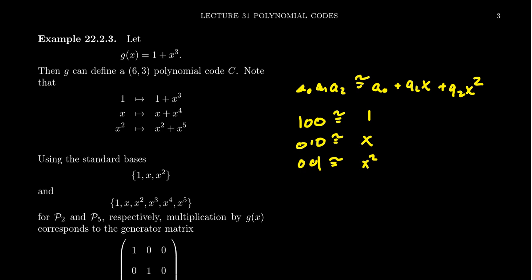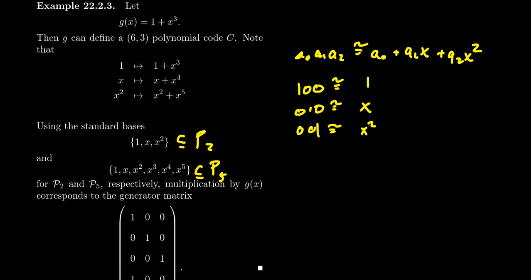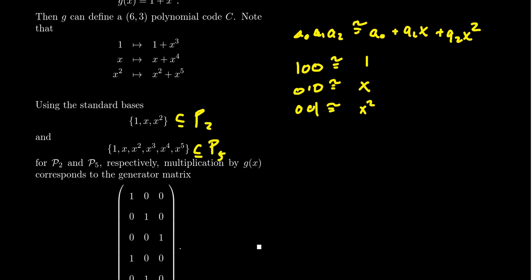So using the standard basis, 1, x, x^2, and 1, x, x^2, x^3, x^4, x^5, which is the standard basis right here of P2, and this is the standard basis of P5, like so. So then this identification right here, 1 goes to g, x goes to x*g, and x^2 goes to x^2*g. Notice what happens here.